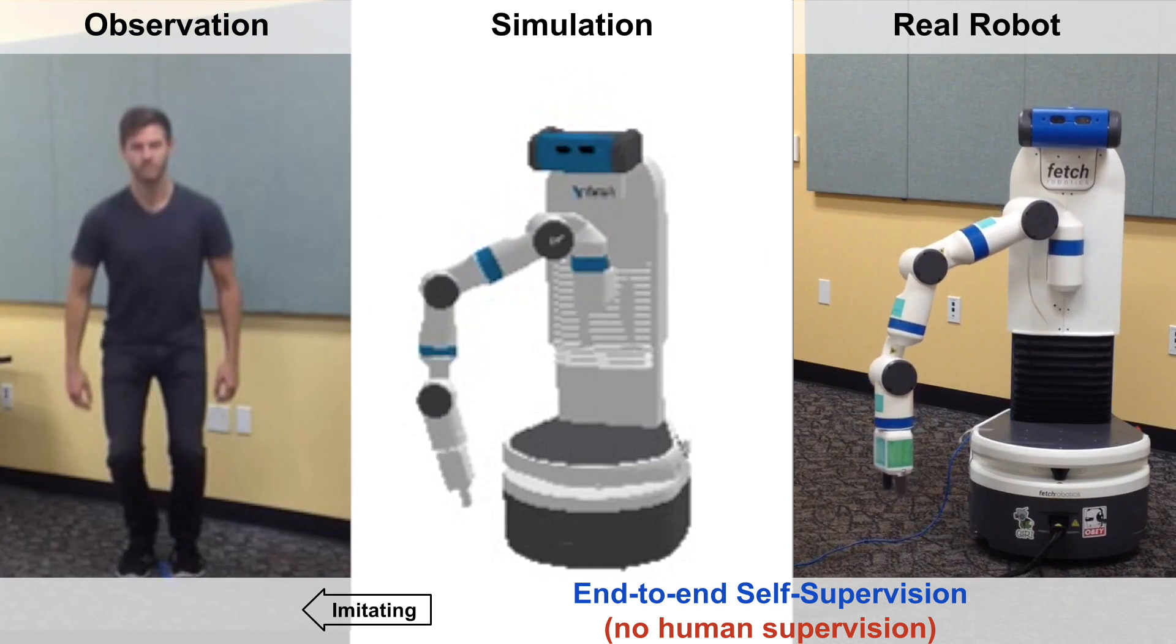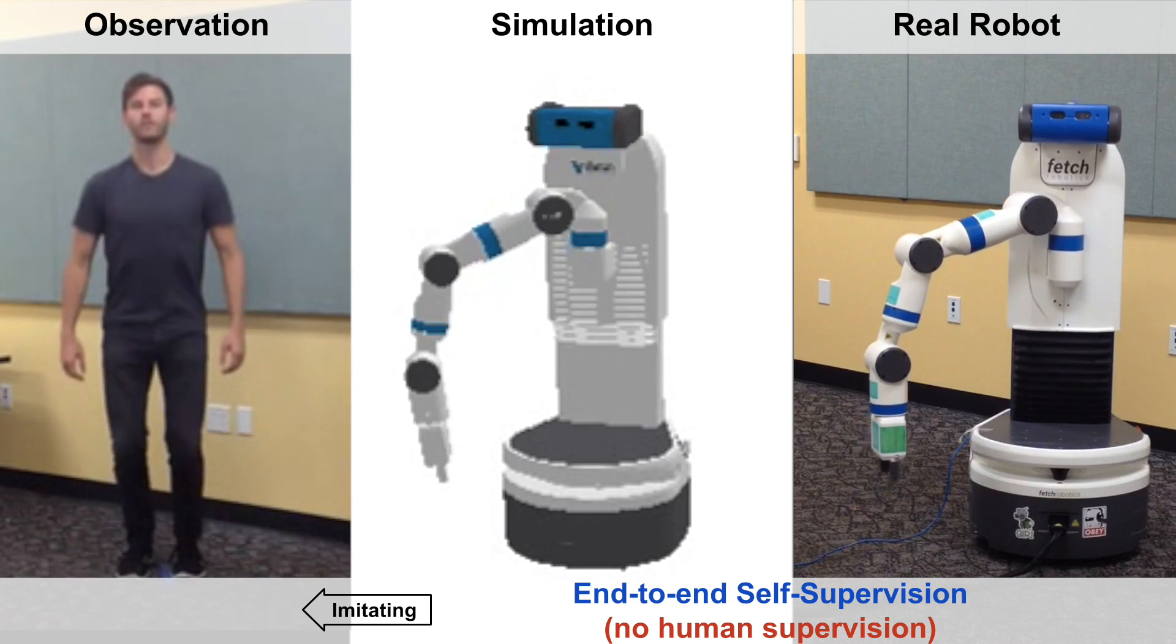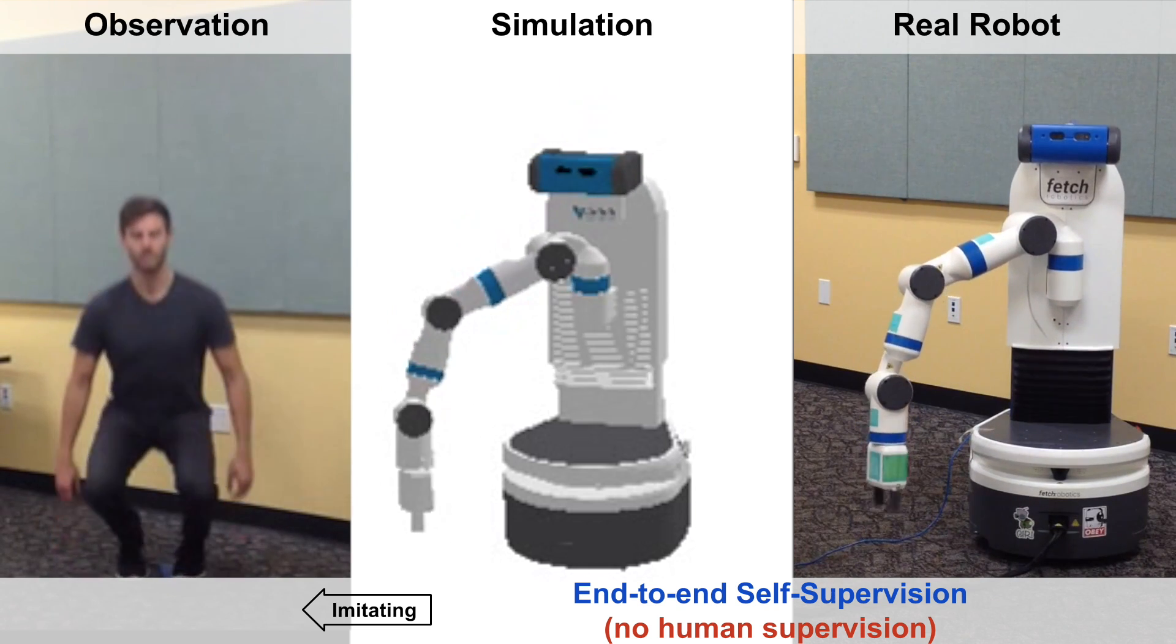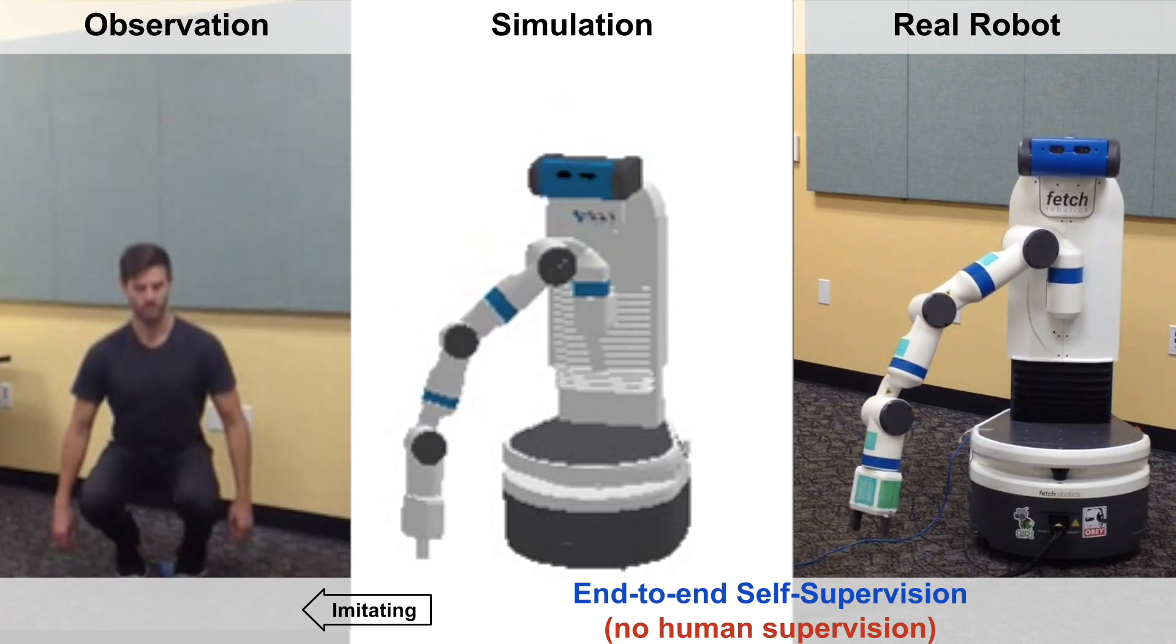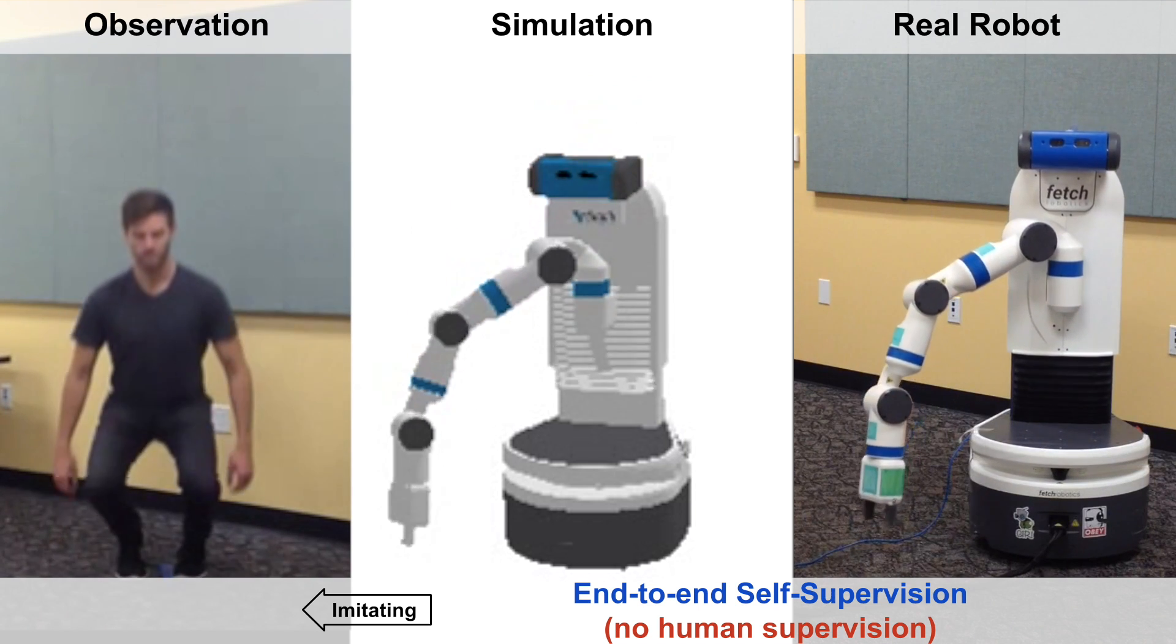Note that while squatting up and down only requires a single joint for this robot, it involves many joints for humans. This complex, nonlinear mapping was discovered via self-supervision.